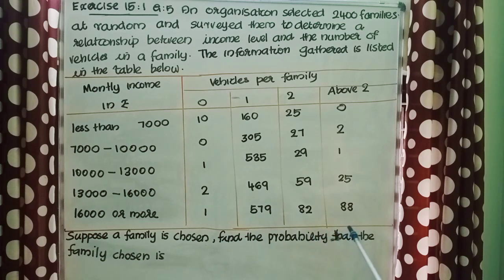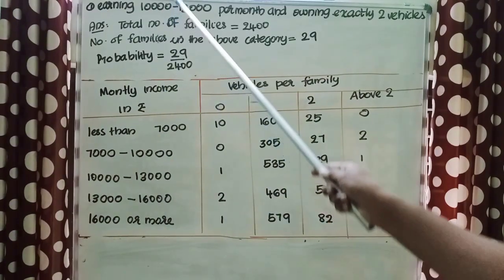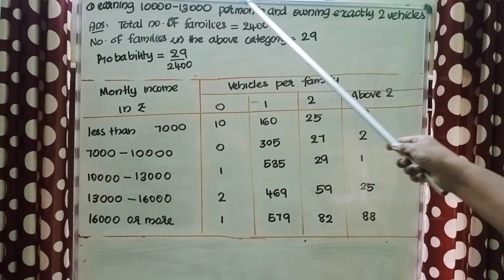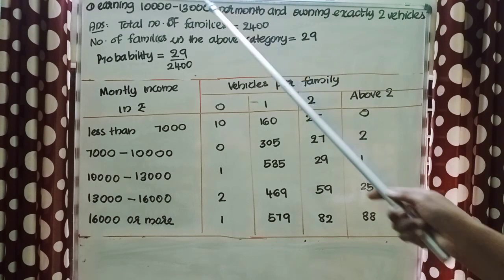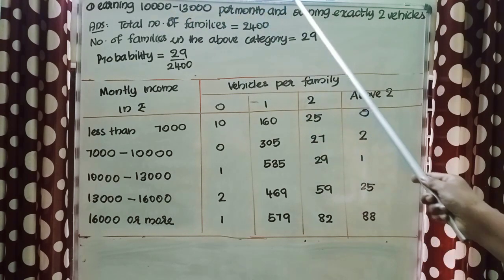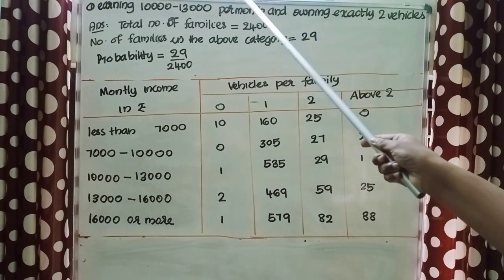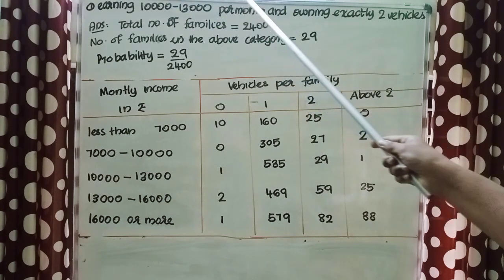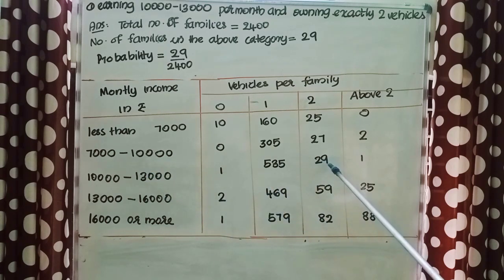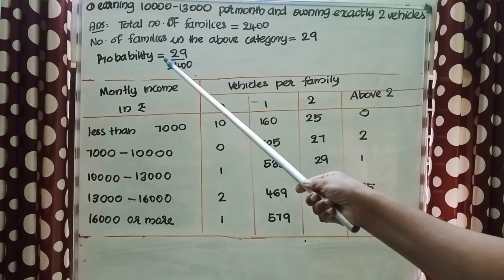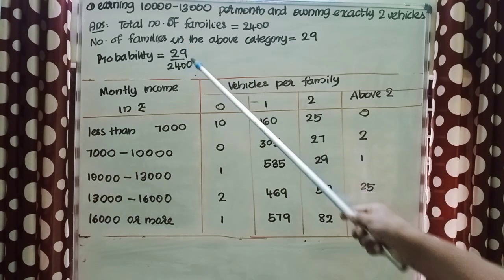Find the probability that the family chosen is earning 10,000–13,000 per month and owning exactly 2 vehicles. Total number of families = 2,400. By seeing the table, number of families earning 10,000–13,000 and owning exactly 2 vehicles = 29. So probability = 29/2,400.